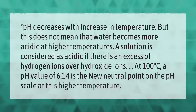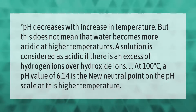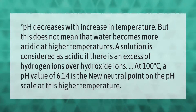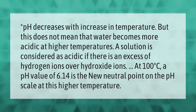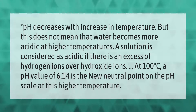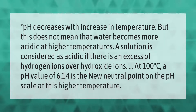pH decreases with an increase in temperature, but this does not mean that water becomes more acidic at higher temperatures. A solution is considered acidic if there is an excess of hydrogen ions over hydroxide ions. At 100 degrees Celsius, a pH value of 6.14 is the new neutral point on the pH scale at this higher temperature.